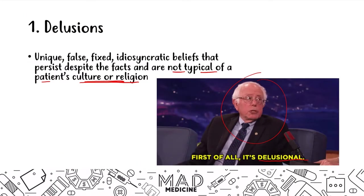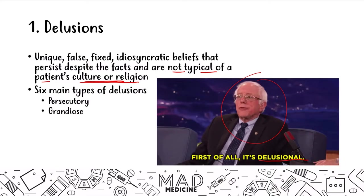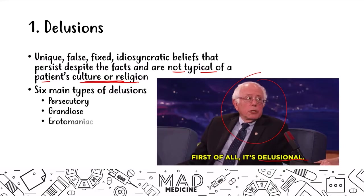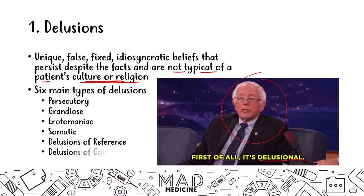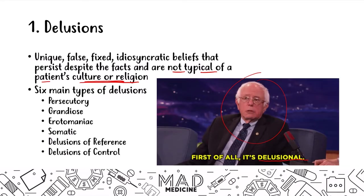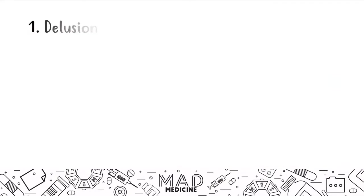There are six main types of delusions a patient could have. They can have persecutory delusions, grandiose delusions, erotomanic delusions, somatic delusions, delusions of reference, and delusions of control. We're going to talk a little bit more about these just so you guys have a better understanding of what these main types are.